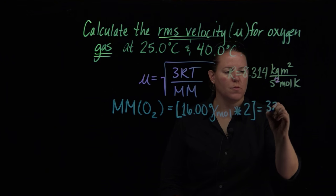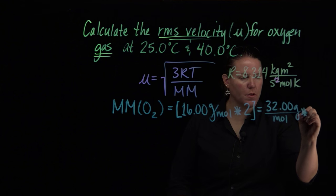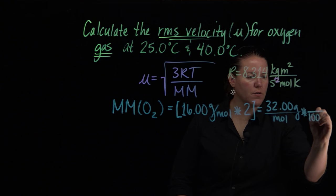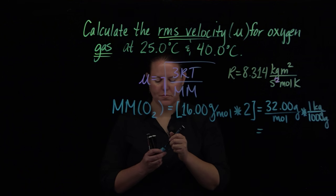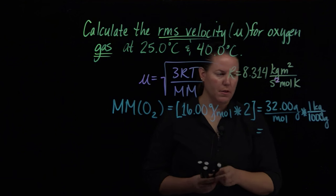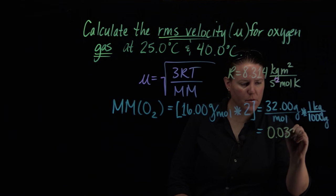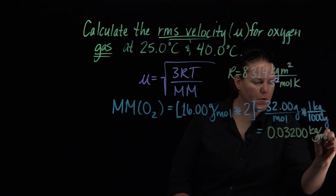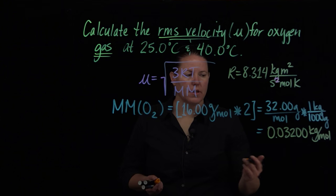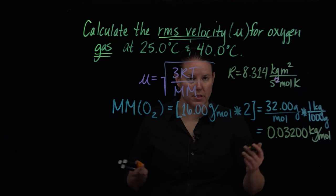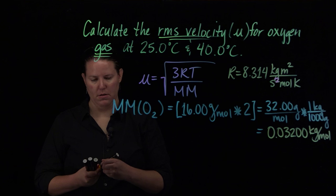Then I'm going to convert this to kilograms per mole. Right now we have 32 grams per mole. If I want to convert that to kilograms per mole, I remember there are a thousand grams in one kilogram. I'm going to move the decimal point three places to the left. So that's 0.03200 kilograms per mole. That makes sense because grams are a smaller unit than kilograms.